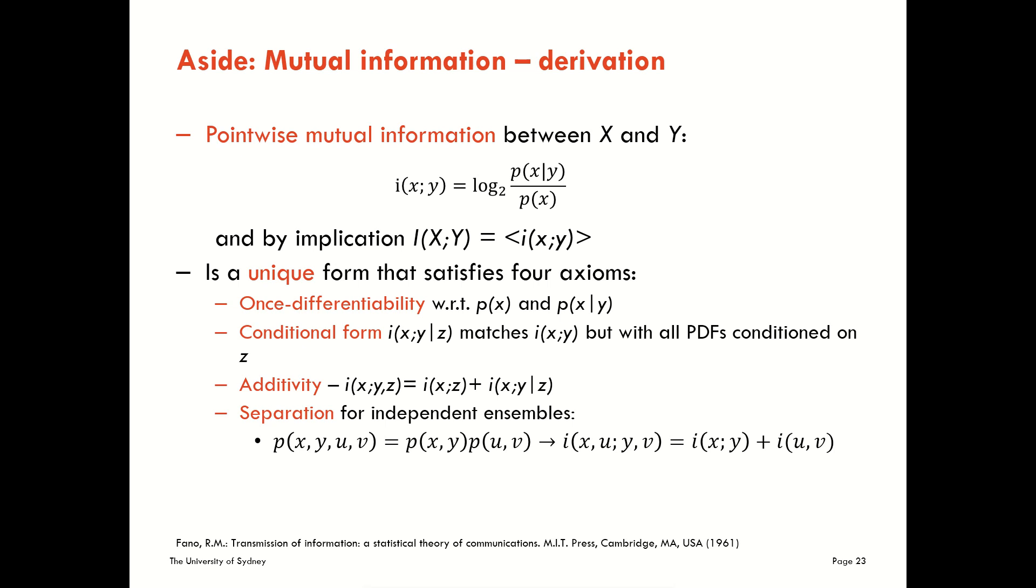So a final aside that I want to give pertains to deriving mutual information. I've kind of laid it down as a given in this lecture, coming from various aspects of intuition, but we can actually derive mutual information directly from axioms in the same way that we derived entropy from axioms. The approach that I really like for this is found in the classic Fano text, which looks at deriving first the pointwise mutual information and then implying the average mutual information as an ensemble average over those terms.